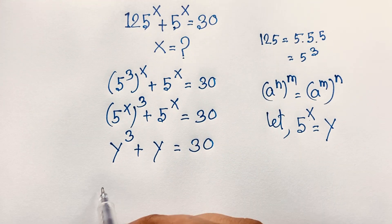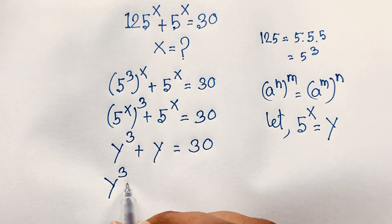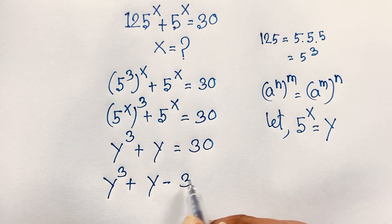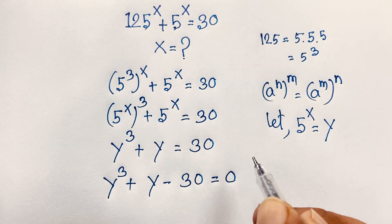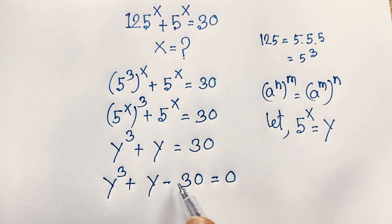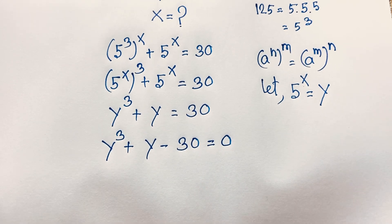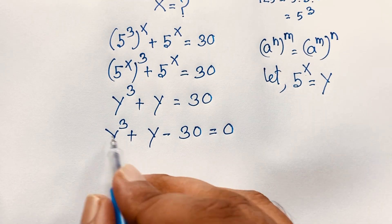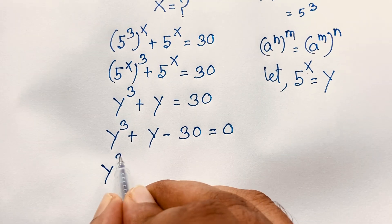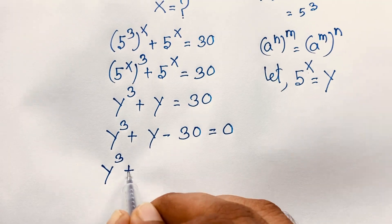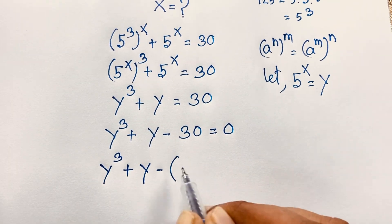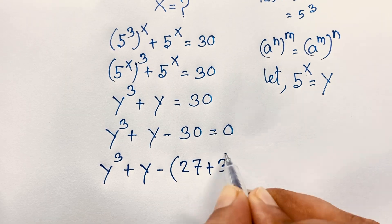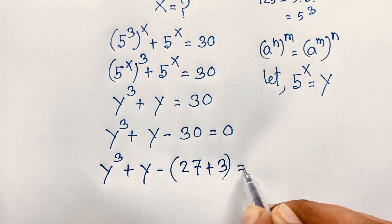You can see easily, it will be y³ + y − 30 = 0. I just move this 30 to this side, so it becomes negative 30. I solve this question step by step. Then here, y³ + y − 30 becomes y³ + y − 27 − 3 = 0.